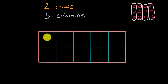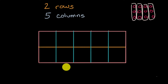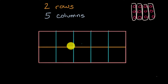So there you have it — I have two rows and five columns. Now what's interesting is, when I split the rectangle this way into two rows and five columns, how many equal-size squares did I create? I've created one, two, three, four, five, six, seven, eight, nine, ten equal squares.